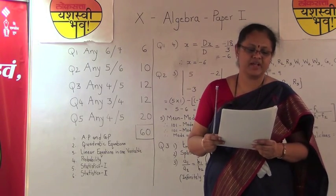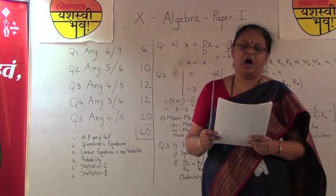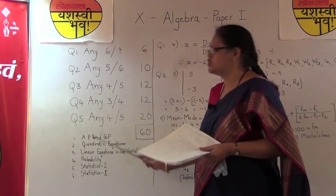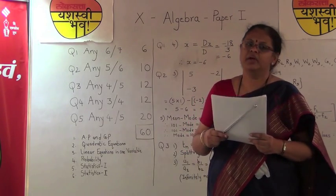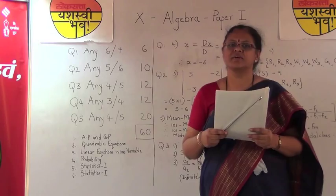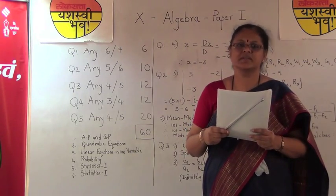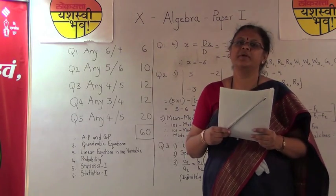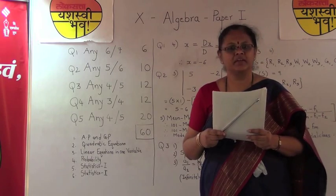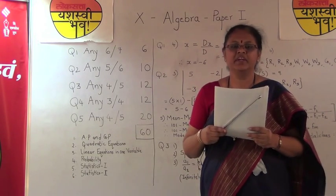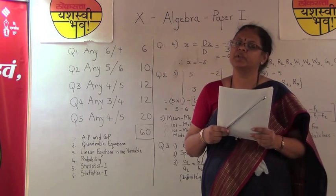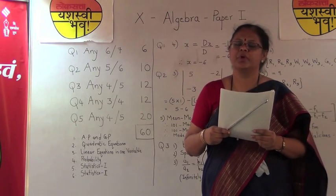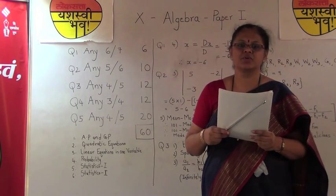Look at question one, which has seven sums in it, out of which you understand six topics are there, so at least one question of each topic will be given in question one. There are no such sums given in your exercises related to one mark, so mostly all the seven sums or at least three to four sums may be different than the sums given in the textbook. Do not worry, even if they are HOT sums, if you know the proper theories and formulas related to all the topics, you will be confident in solving all seven sums and scoring full six marks.